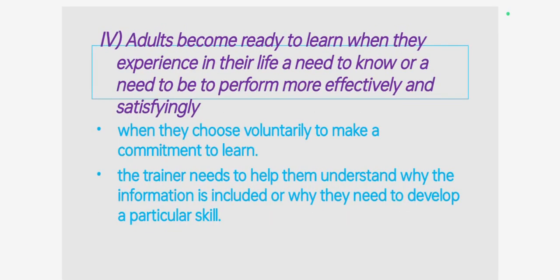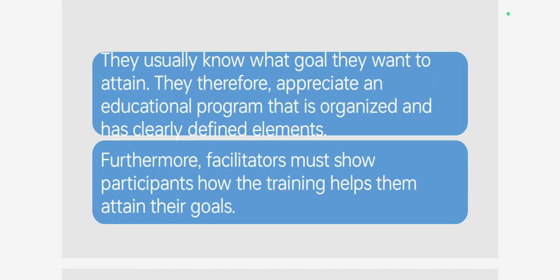The fourth characteristic of adult learners is that adults become ready to learn when they experience a need in their life to know or to perform more effectively and satisfyingly. This means adults learn best when they voluntarily commit to learning. The trainer or facilitator needs to help them understand why the information is included or why they need to develop a particular skill. They usually know what goal they want to attain, so facilitators must show participants how the training helps them attain their goals.